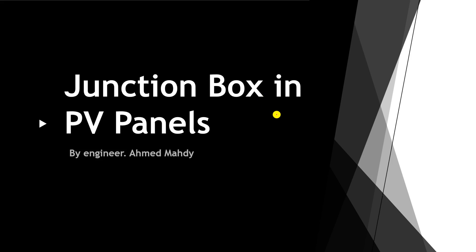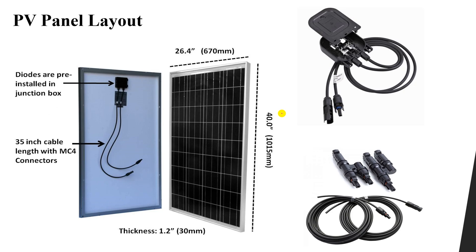In this lesson we are going to talk about the junction box in PV panels. If you look at any PV panel, you can see the front with its own width, length, and thickness. Now if you look at the back of the PV panel, you will find a box — this box is known as the junction box.